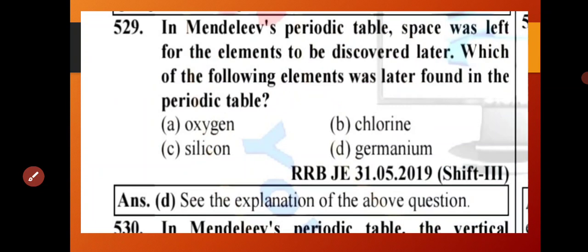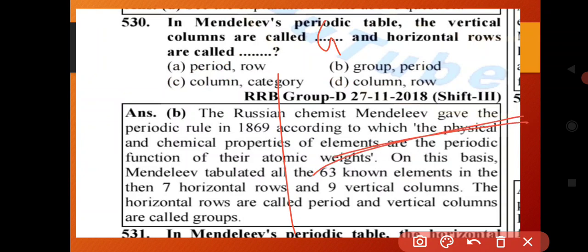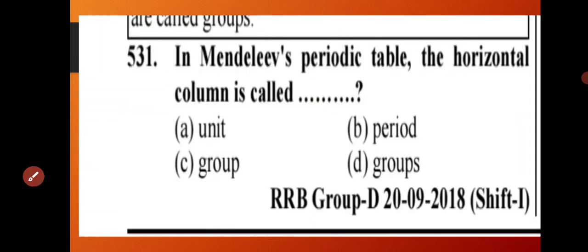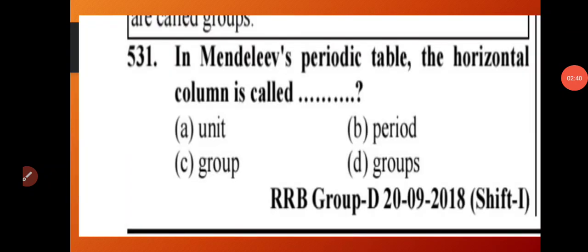Next question — same question repeated. In Mendeleev's periodic table, the vertical columns are called groups and the horizontal rows are called periods. Option B.